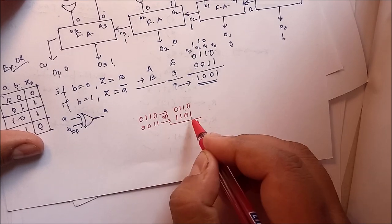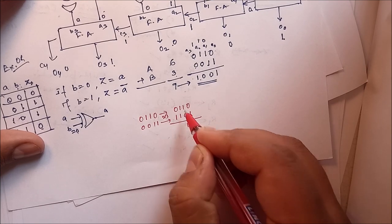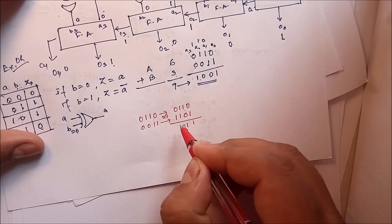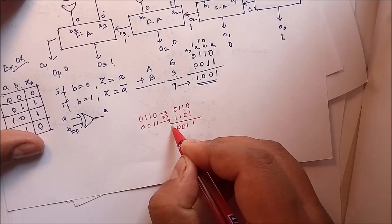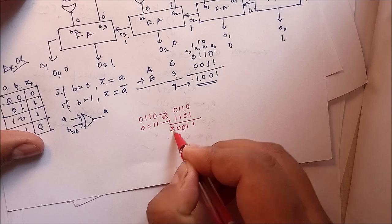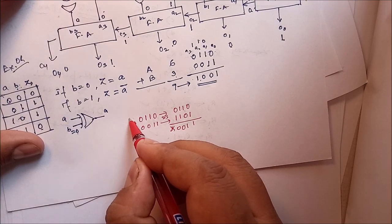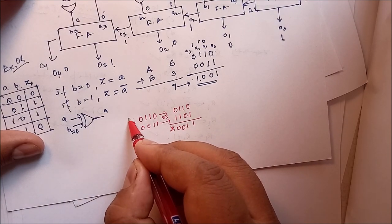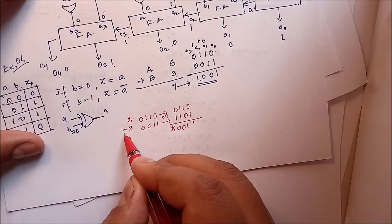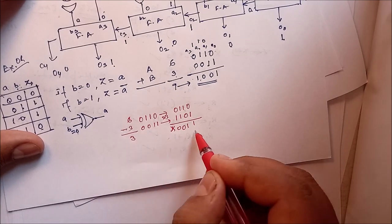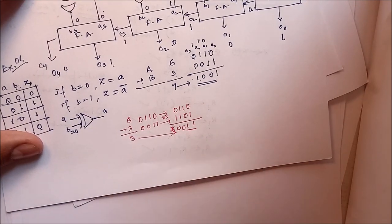If you add 0110 and 1011 with c=1 as the carry-in: 1 plus 1 is 0, carry 1; 1 plus 1 is 0, carry 1. We discard the final carry. So 6 minus 3 gives answer 3, which is 0011.